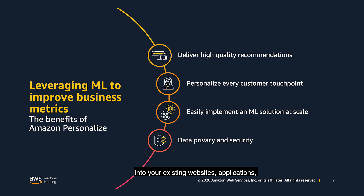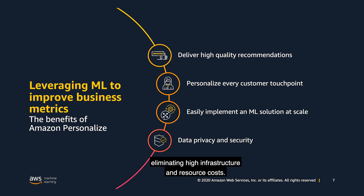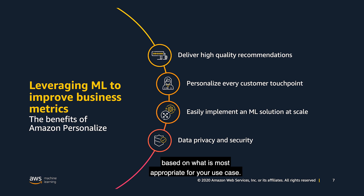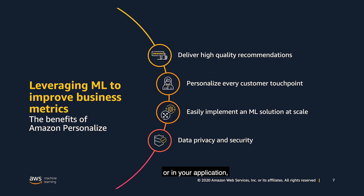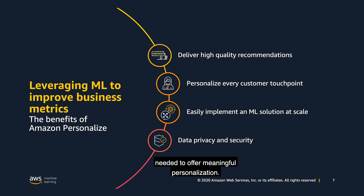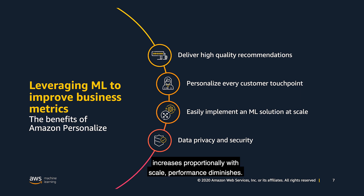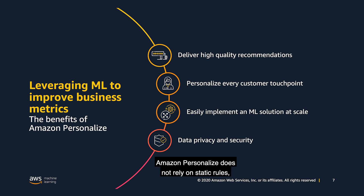Personalize easily integrates into your existing websites, applications, and email marketing systems to provide unique customer experiences across channels and devices, eliminating high infrastructure and resource costs. Personalize provides flexibility to use real-time or batch data based on what is most appropriate for your use case. For example, real-time data may be more appropriate for product or content recommendations on a website or in your application, whereas batch data may be more appropriate for large email campaigns. A significant challenge with static rule-based systems is efficiently scaling and maintaining the rules needed to offer meaningful personalization. This means that while human effort to maintain these solutions increases proportionally with scale, performance diminishes, resulting in poor consumer experiences and decreased ROI. Amazon Personalize does not rely on static rules, enabling you to scale your personalization strategy efficiently.